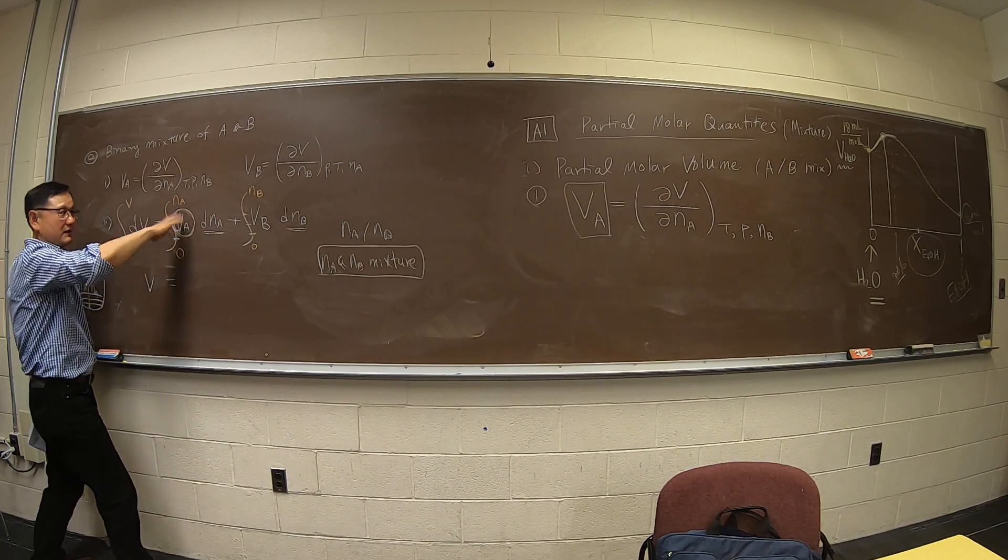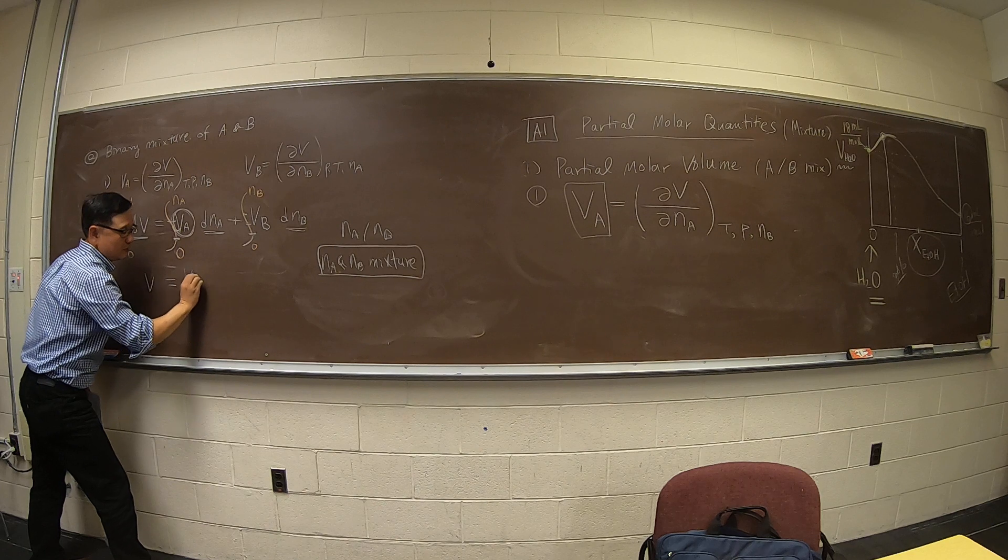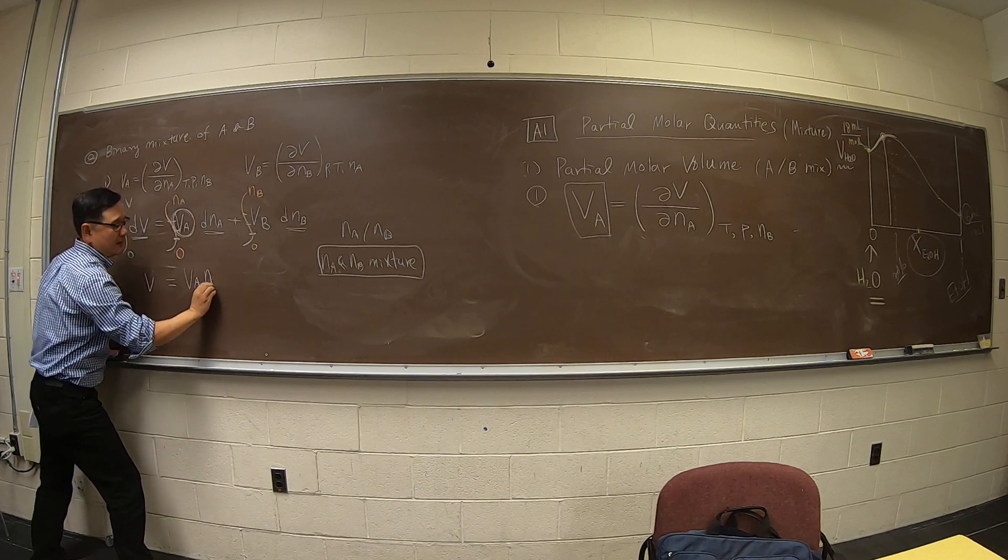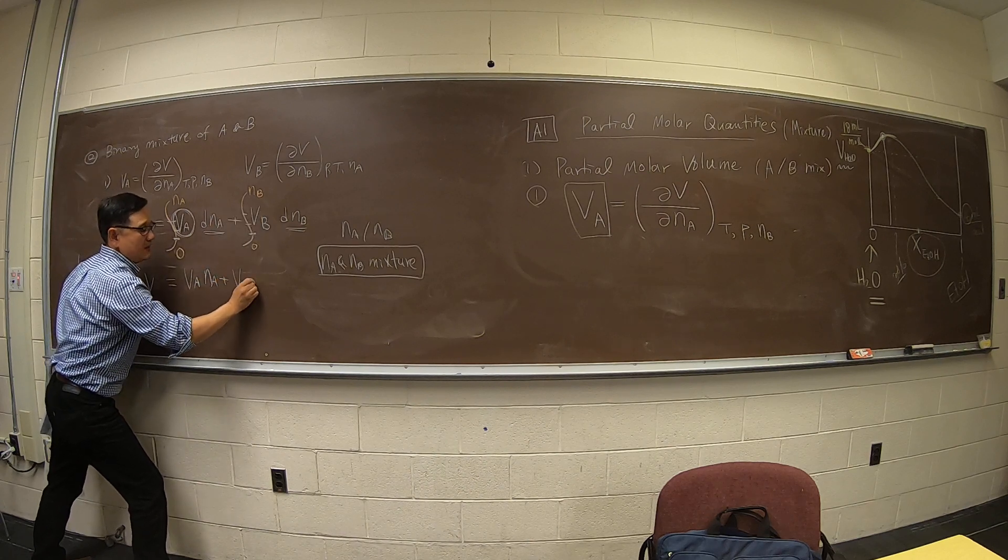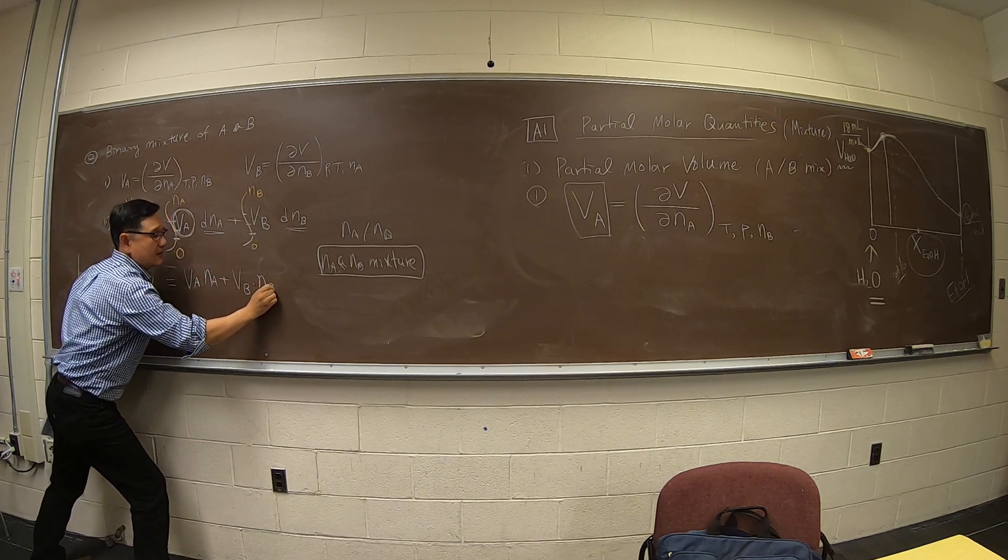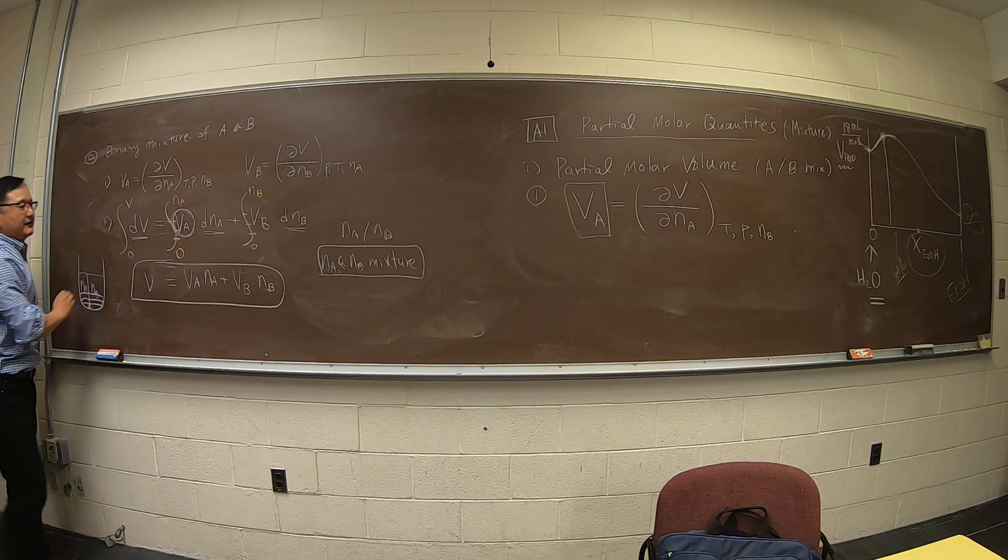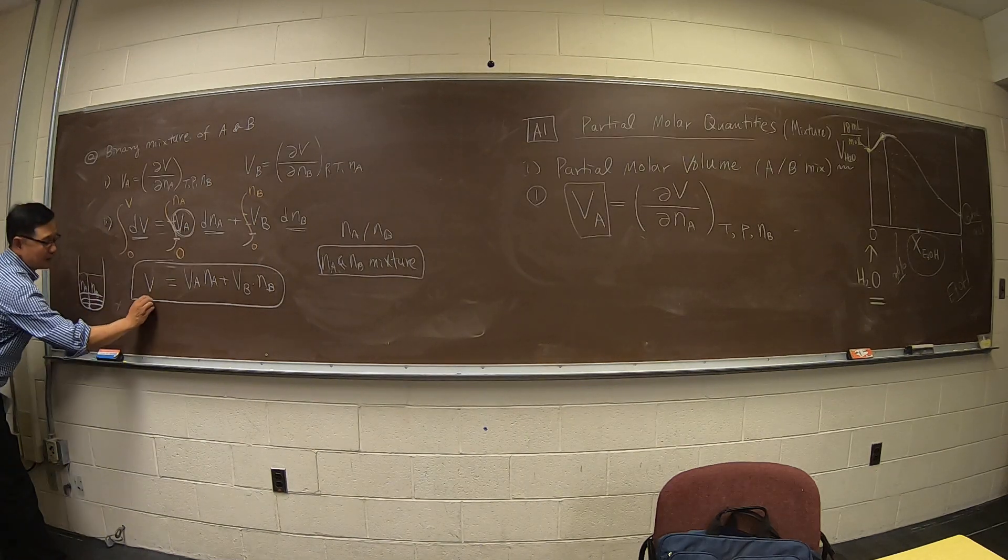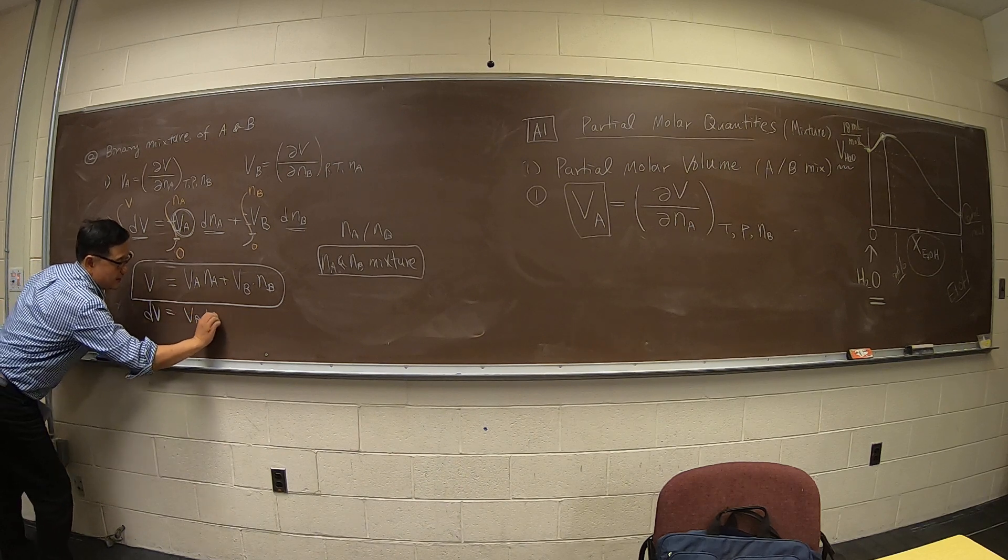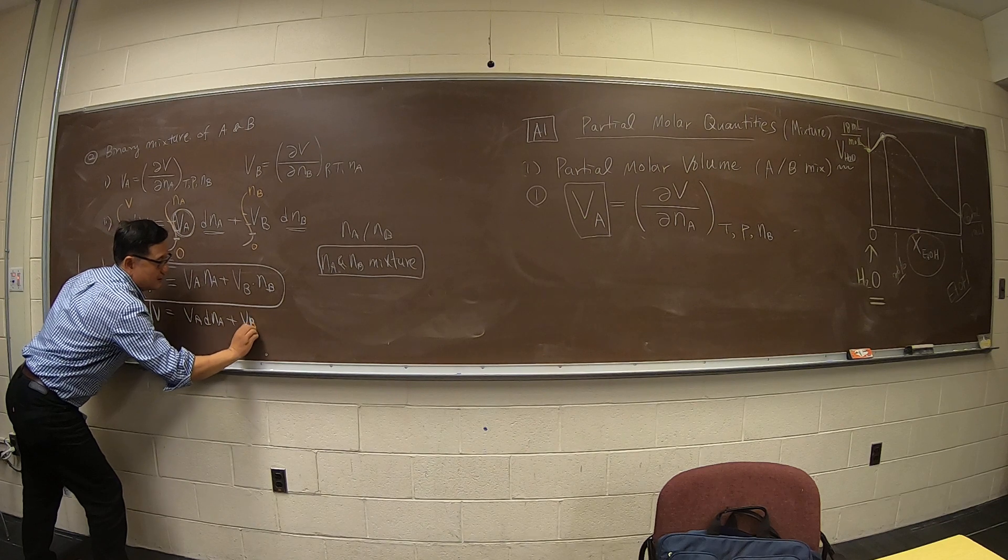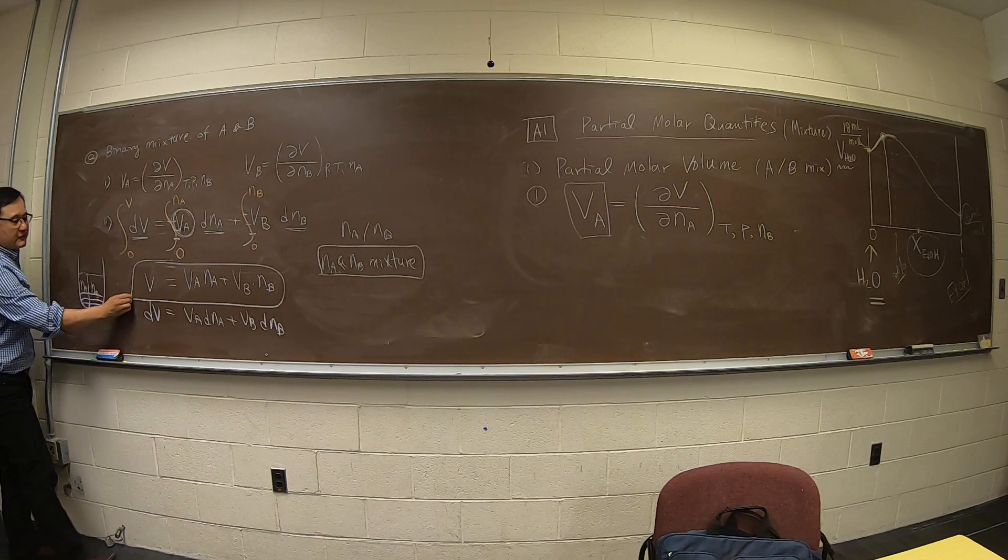Okay? Strictly speaking, it's not constant, but I'm being careful enough to maintain the ratio to be the same. So, this one come out, and NA. And this one is now constant, so VB times NB. So, I have a new equation, looks like that. And then previously I told you that dV is VA dNA, VB dNB. These are the two equations.